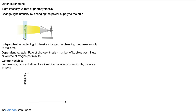The graph for this experiment looks slightly different. We have number of bubbles per minute on the y-axis as our dependent variable, and the power output of the lamp in watts as our independent variable on the x-axis. The curve shows that the higher the power, the greater the number of bubbles per minute, indicating a higher rate of photosynthesis.